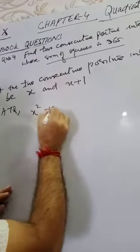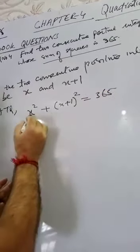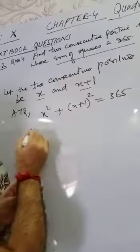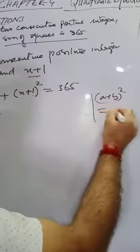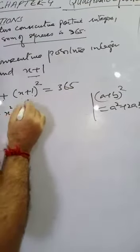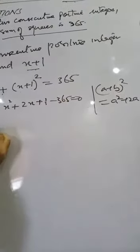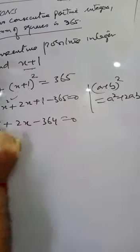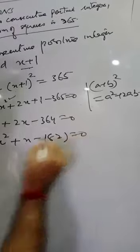According to the question, the sum of squares means first number squared plus second number squared equals 365. So x squared plus (x plus 1) squared equals 365. Applying the identity (a plus b) squared equals a squared plus 2ab plus b squared, we get 2x squared plus 2x plus 1 minus 365 equals 0, which simplifies to 2x squared plus 2x minus 364 equals 0. Taking 2 as common, we get x squared plus x minus 182 equals 0.